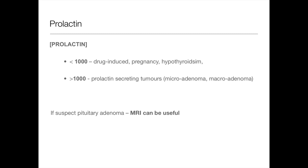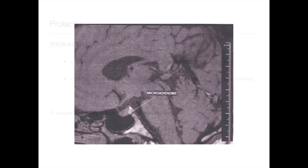Then check prolactin. A level less than 1,000 can be pregnancy-induced, drug-induced, or due to hypothyroidism — remember, TSH increases prolactin levels, so in hypothyroidism you get elevated TSH and elevated prolactin. Greater than 1,000 points more towards prolactin-secreting tumours — a microadenoma or macroadenoma. The key investigation for that is an MRI.